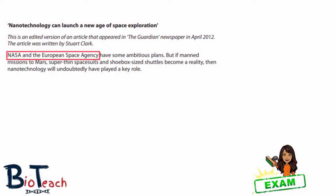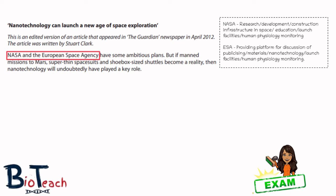It might be useful to see some marking scheme guidance on this particular question. This is an extract taken from the nanotechnology articles available on BTEC — they might be locked, so just be aware of that. The topic was nanotechnology and the article is from the Guardian newspaper written in 2012. I've highlighted two organisations: NASA and the European Space Agency. NASA are responsible for researching, development, education, and human physiology monitoring. The European Space Agency provides a platform for discussion and looks at materials, nanotechnology, and human physiology monitoring. These two organisations could each form part of a paragraph explaining how they've influenced this particular scientific issue.